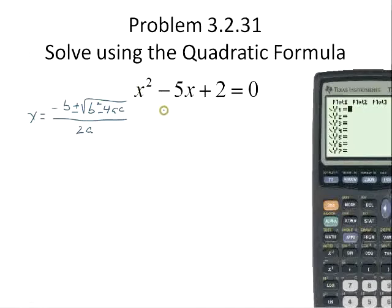The a is the coefficient of the x squared term, so on our particular problem, a is going to be equal to 1. The b is the coefficient of the x term, so our b is going to be negative 5. And c is going to be this constant, so our c is equal to 2.